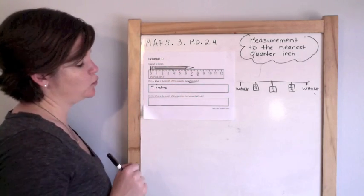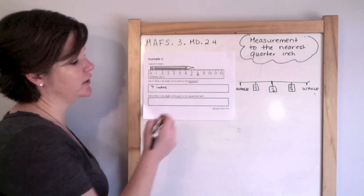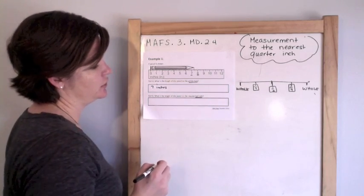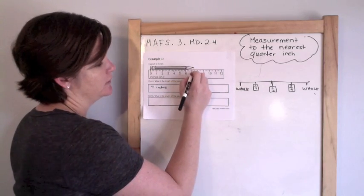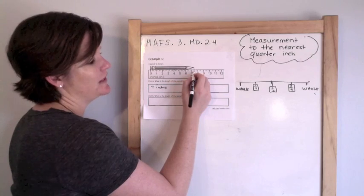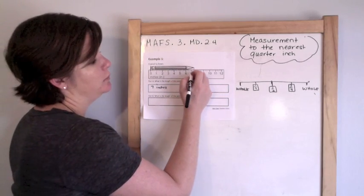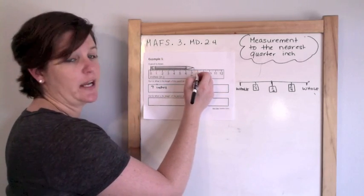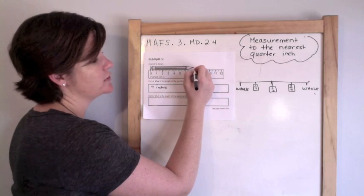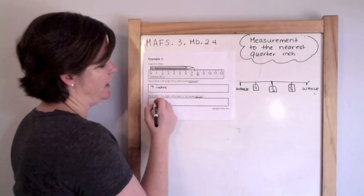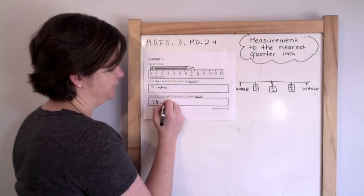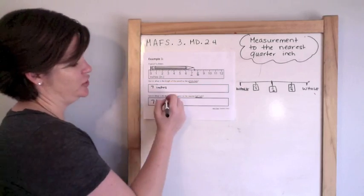But here, part B says, what is the length of the pencil to the nearest half inch? Which would be the half inches, wouldn't just be like seven and a half. It would be seven, seven and a half, or eight. So this one is closest to the seven and a half inch line.